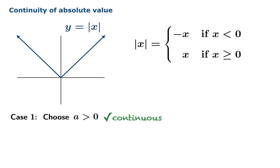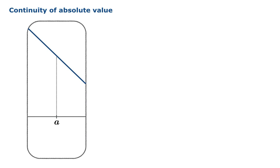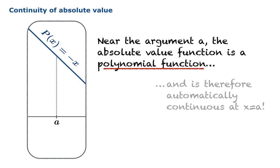Now we choose an argument that's negative. Once again, we'll zoom in near that argument, and the key observation is that near the argument, the absolute value function is simply polynomial — a very simple polynomial. It looks like negative x. So near the argument a, the absolute value function is literally polynomial, and therefore is automatically continuous. So we've taken care of negative arguments.